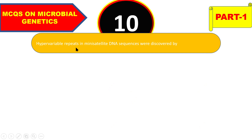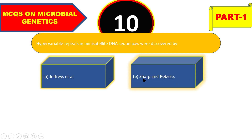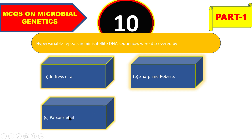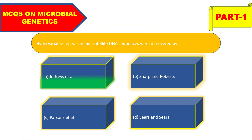Next question: hypervariable repeats in mini-satellite DNA sequences were discovered by Jeffrey's, Sharp and Roberts, Parsons and Shears, or Shears? The right answer is Jeffrey's — he is the discoverer of hypervariable repeats in mini-satellite DNA sequences.